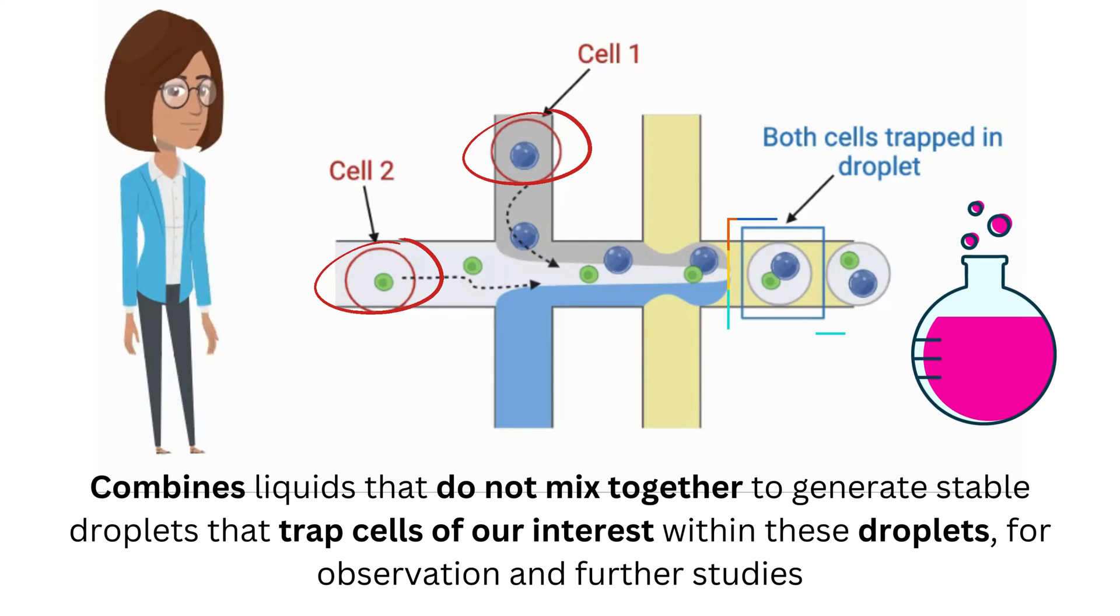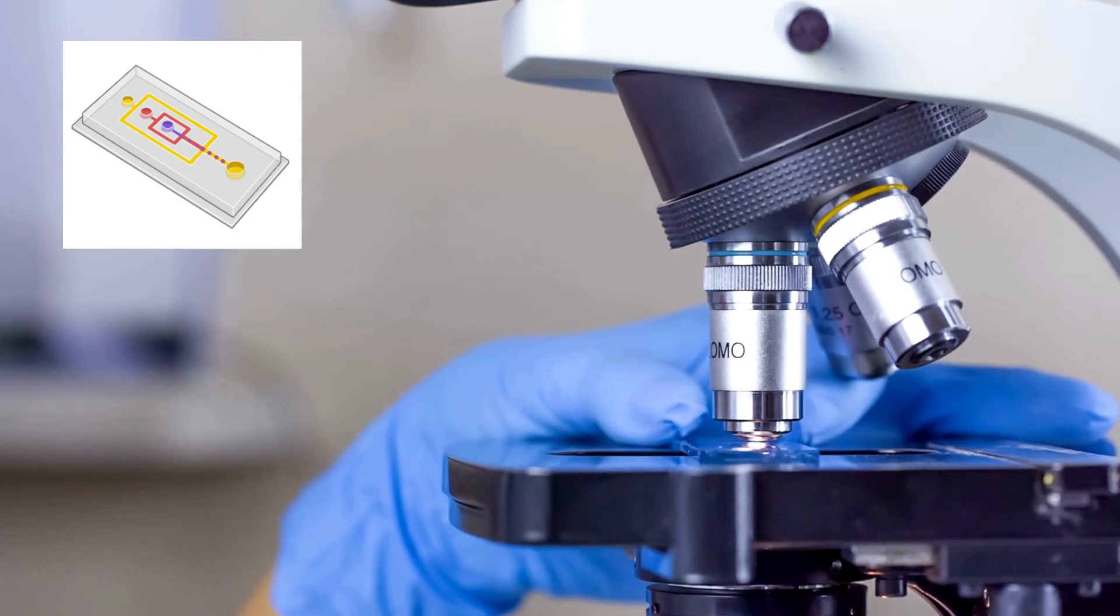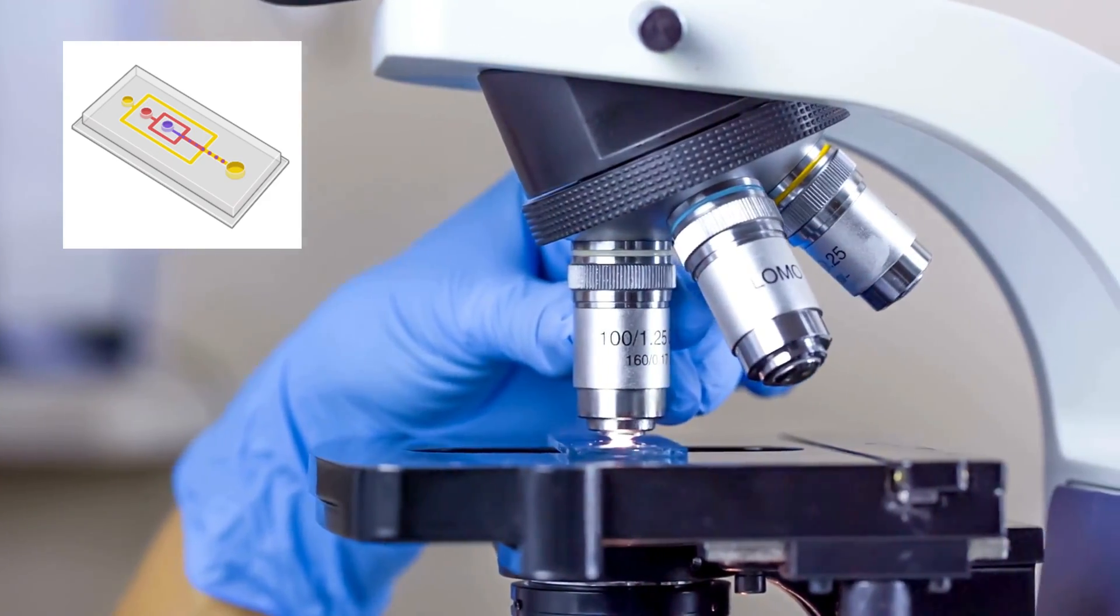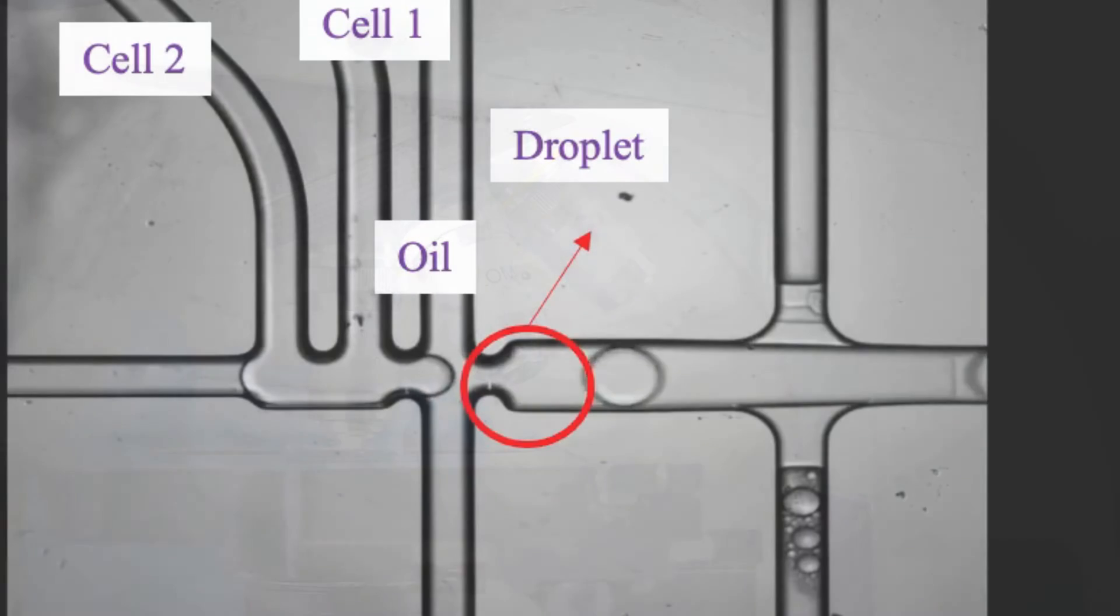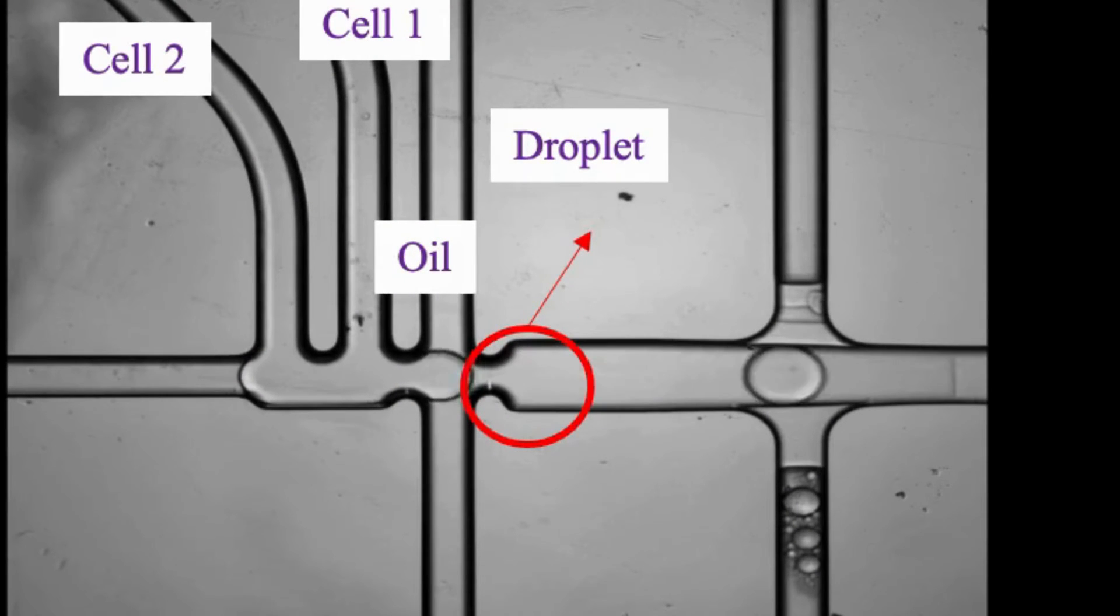Droplet microfluidics uses tiny chips, which is essentially composed of a see-through material with engraved channels only a few micrometers wide. For example, we can see here as the oil and water liquids merge, droplets are generated at this intersection. Droplets are tiny liquid units that are enclosed by a surrounding layer of a different liquid phase, as we can see. They are tiny micro-reactors.